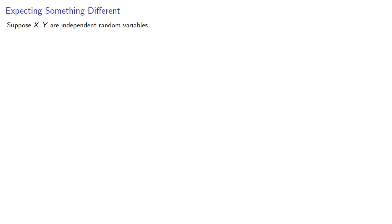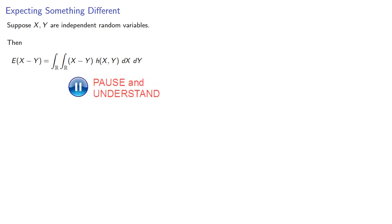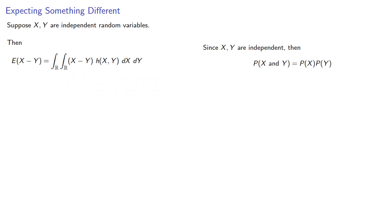Suppose X and Y are independent random variables. Then the expected value of the difference will be a double integral over all real numbers of the difference times the probability density function h. But since X and Y are independent, the probability of both X and Y is the product of the two probabilities. This means that the probability density function h is really f(x) times g(y).